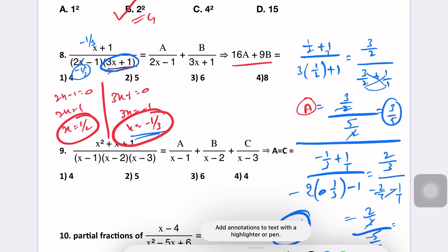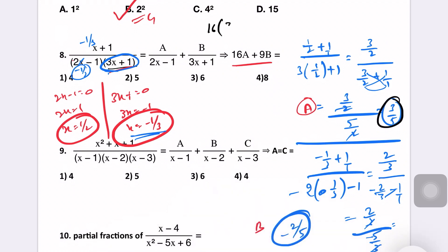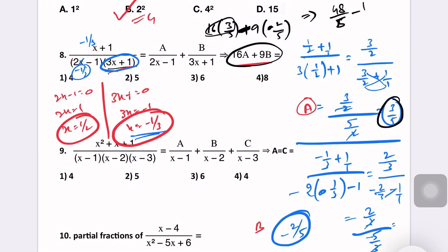16 times a value 3 by 5 gives 48 by 5. 9 times b value minus 2 by 5 gives minus 18 by 5. So 16a plus 9b equals 48 by 5 minus 18 by 5 equals 30 by 5 equals 6. Option number 3 is the right answer.